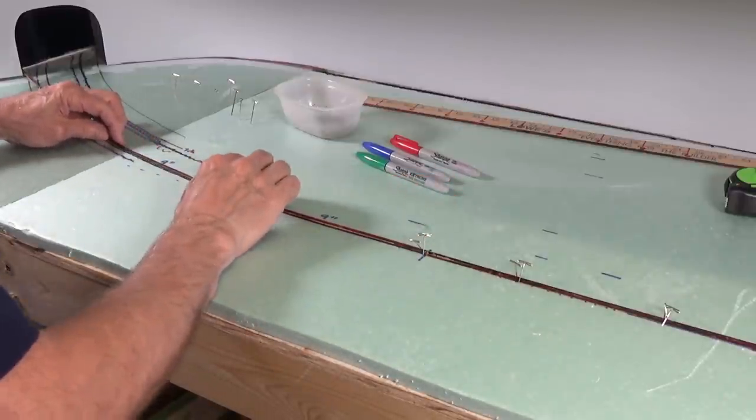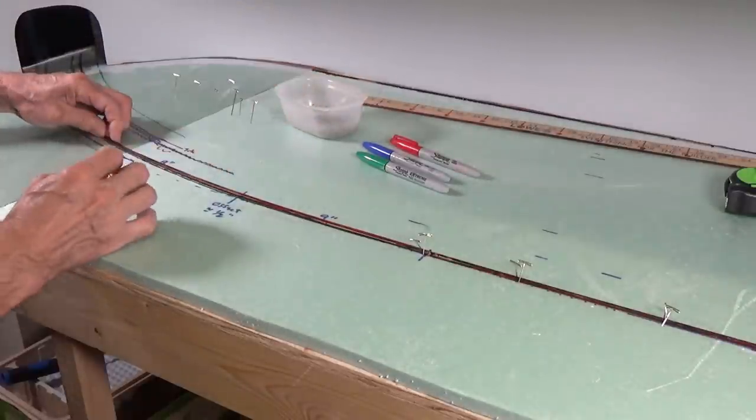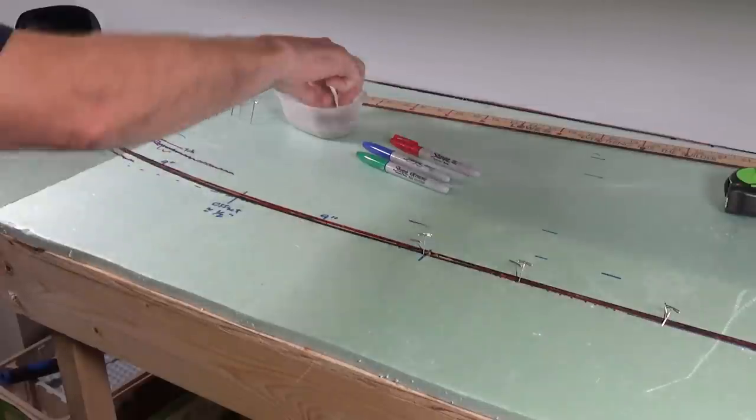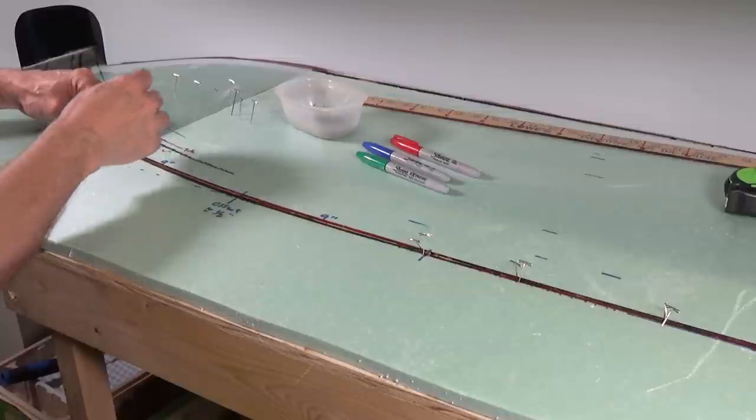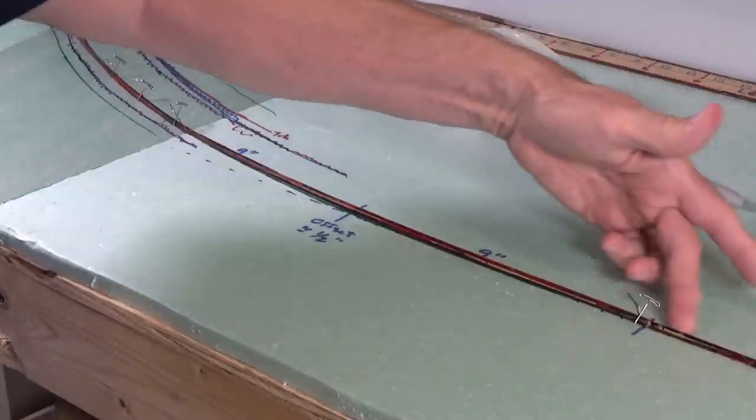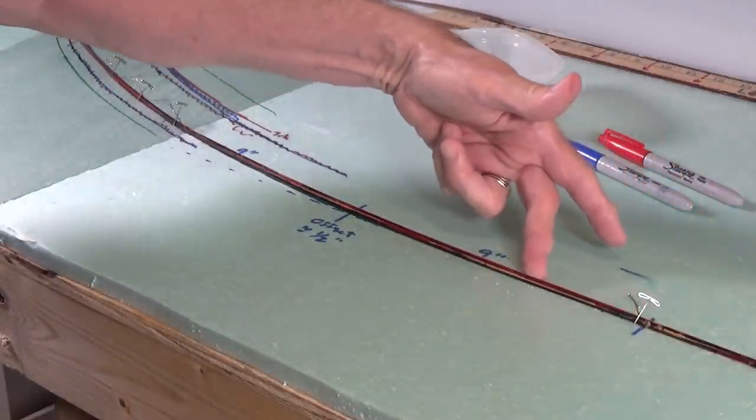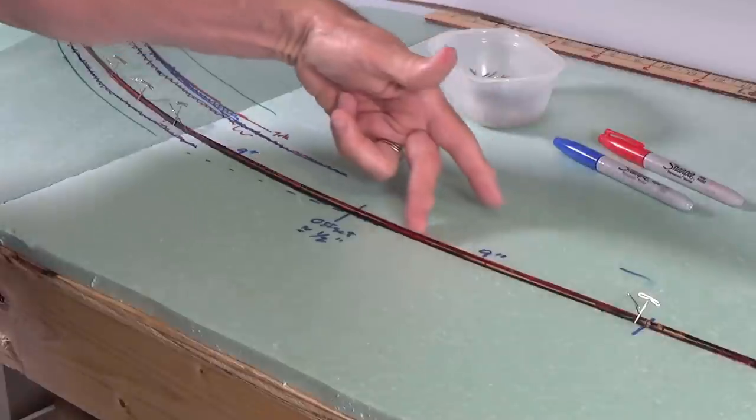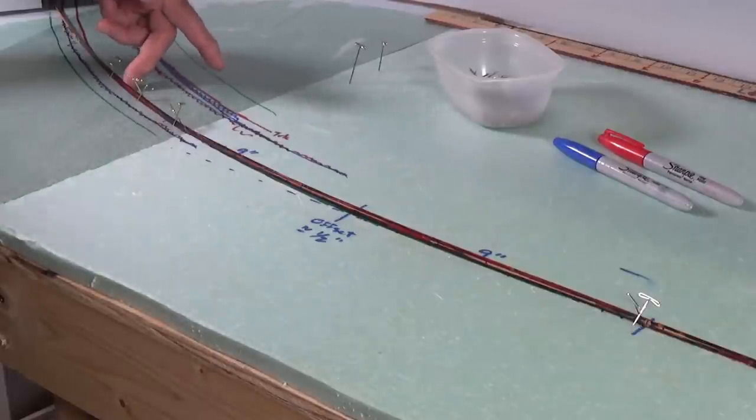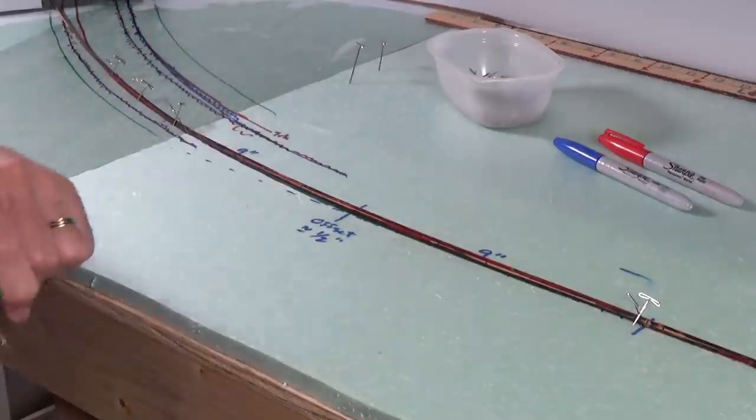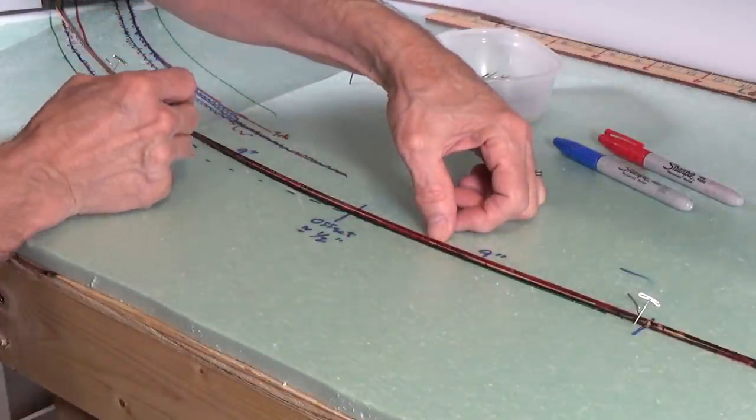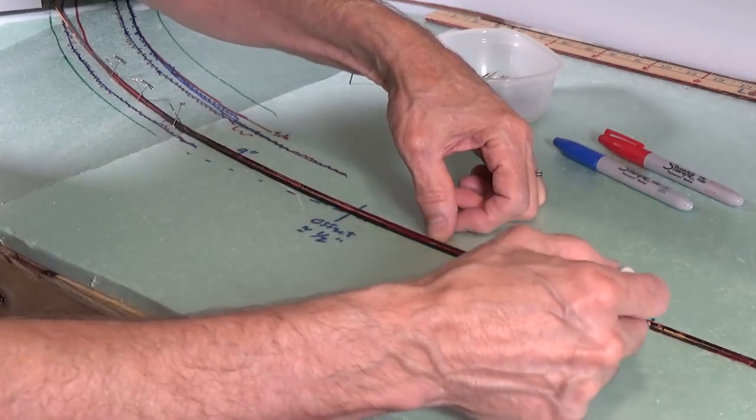And then we bring this on through to here. And this is the point here where we want to intersect with our curve. So what we have then is a transition curve set up by this piece of flexible bamboo running through the transition and into the curved section of the track. So at this point, we can then take, and using a magic marker, just mark off that transition curve. Like that.